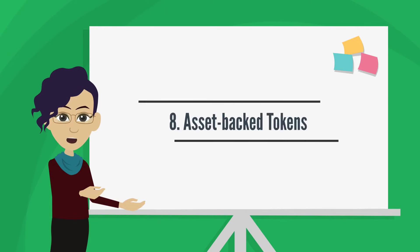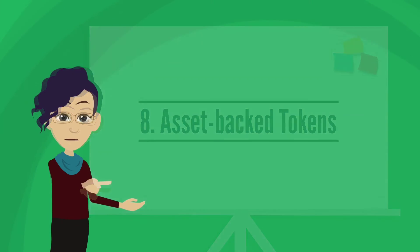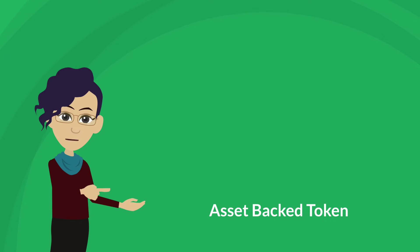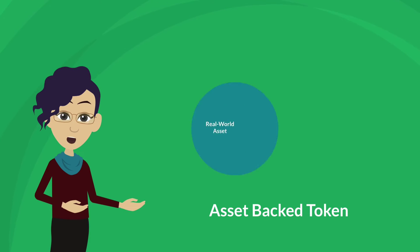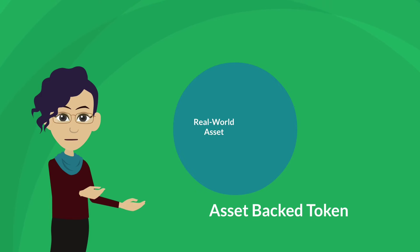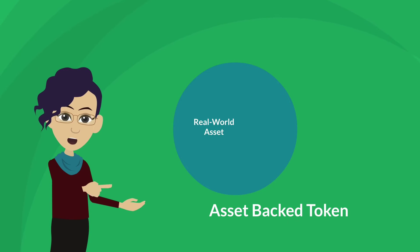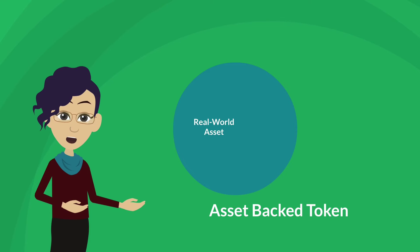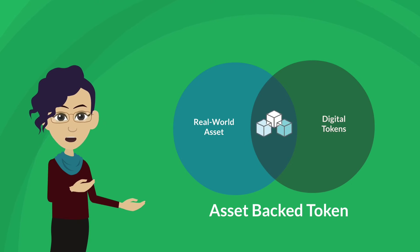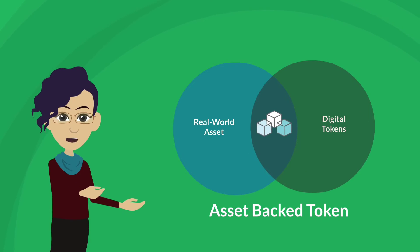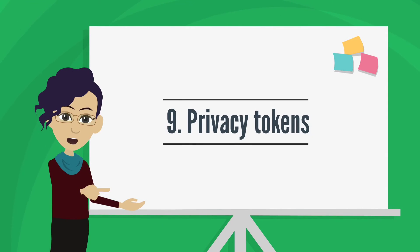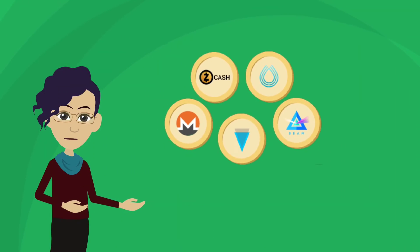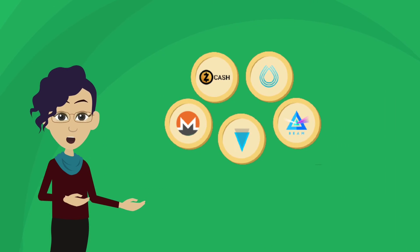Eight: asset-backed tokens. Asset-backed tokens are a category of cryptocurrencies whose underlying value is backed by a real-world asset, which could be money, stocks, bonds, real estate, gold, and precious metals. They are used to digitally represent and trade value for these underlying assets on blockchains.